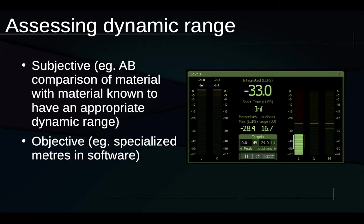Then there are objective methods, which refers to using specialized meters in software to get numerical measurements about the dynamic range and loudness of the material, allowing comparison to other material with appropriate dynamic range based on numbers rather than subjective observations. I think we need to use both methods. The subjective method is always accessible, but even when we have specialized meters, we'll still want to fall back on the subjective method, because the meters probably aren't showing us everything about the dynamics of the audio.